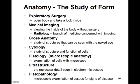We can also explore anatomy through surgery — opening the bodies and looking inside. Medical imaging, such as radiology, includes x-ray views, MRIs, and CT scans. Gross anatomy is the study of structures that can be seen with the naked eye. Cytology is the study of structure and function of just the cells. Histology is the microscopic anatomy. Ultrastructure is the molecular detail seen in an electron microscope. Histopathology is the microscopic examination of tissues for signs of disease — all fields that fall beneath anatomy.